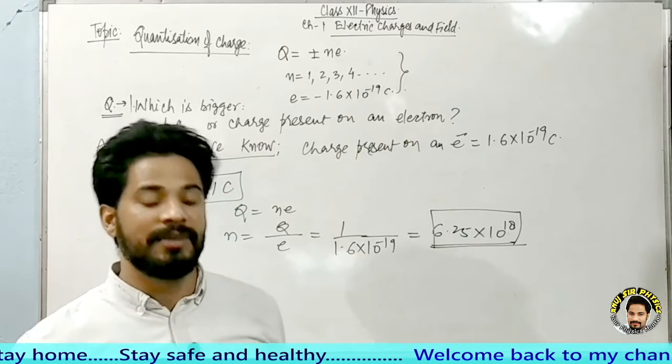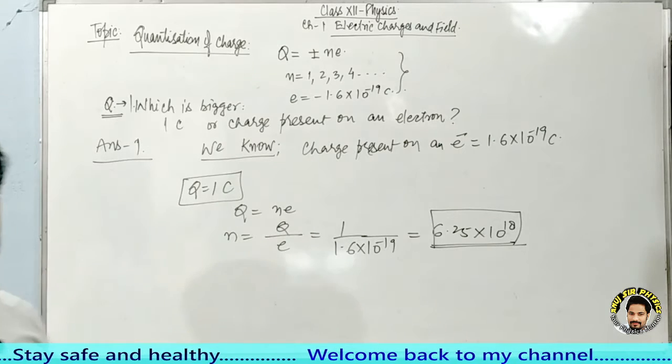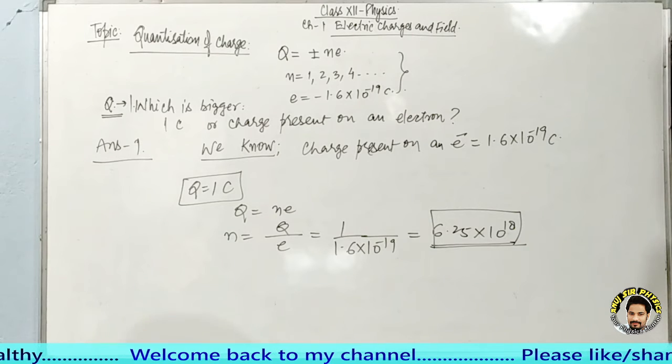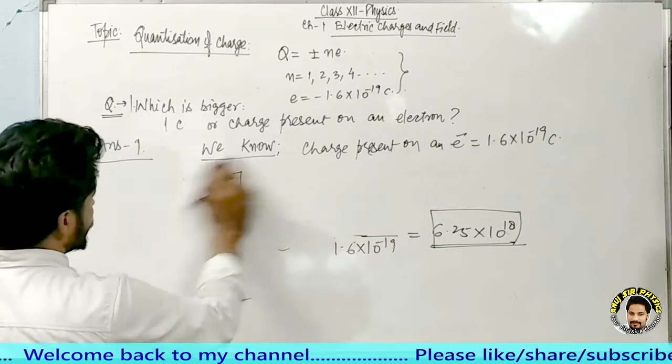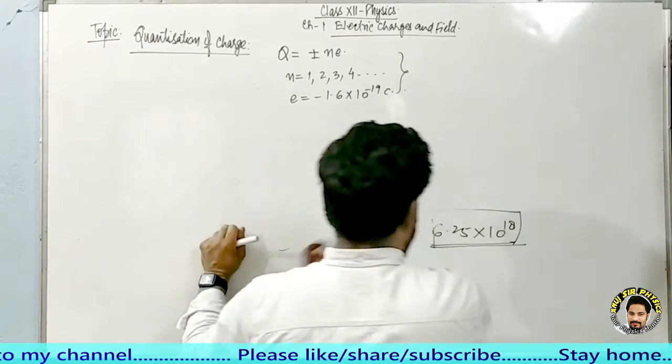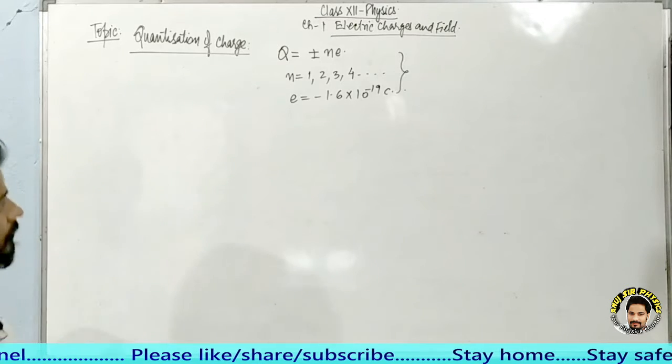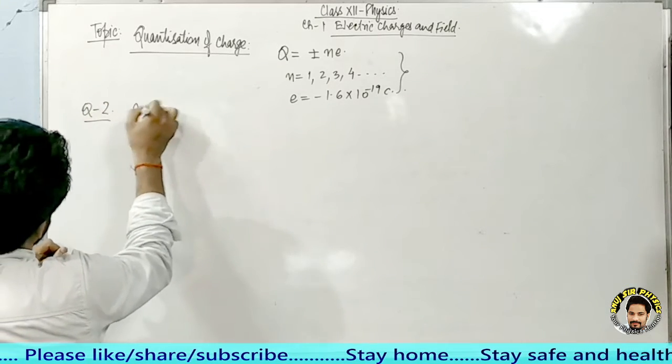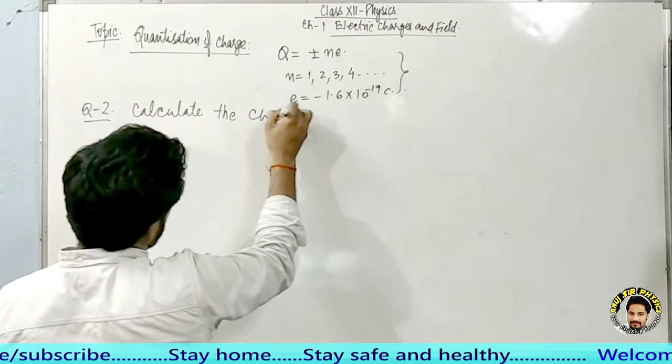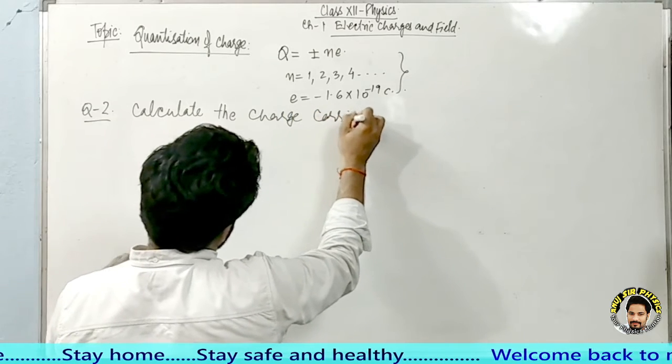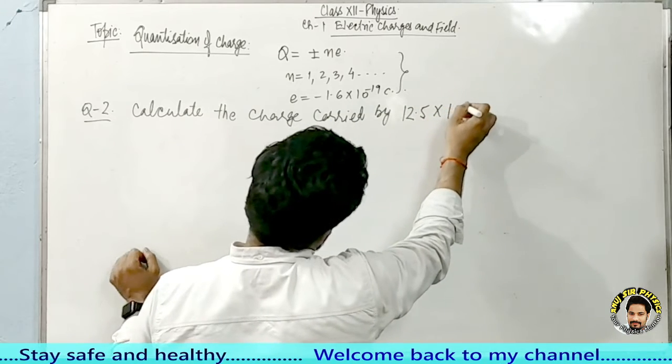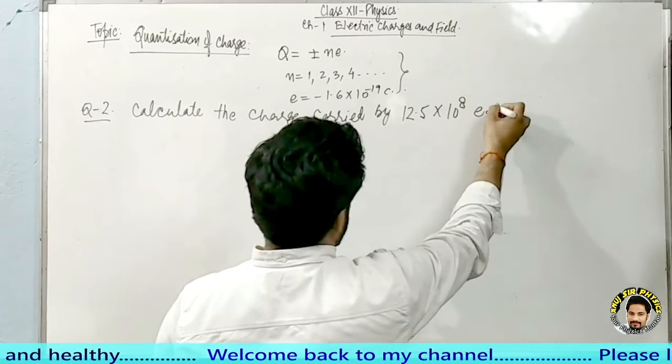Next question we will discuss: Calculate the charge carried by 12.5 into 10 to the power 8 electrons. Question number 2: Calculate the charge carried by 12.5 into 10 to the power 8 electrons.